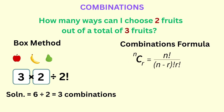This gives rise to the combinations formula. Since the order of the fruits doesn't matter, this is a combination problem. In the formula n choose r, n represents the total number of items we're choosing from, while r represents the exact number of items we are choosing. In this case, the total number of items is three, since Zuri is choosing from a total of three fruits, while r is two, since she is meant to be choosing exactly two fruits.